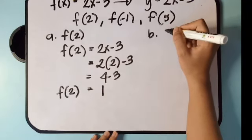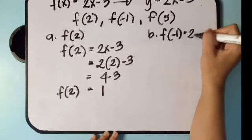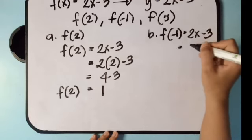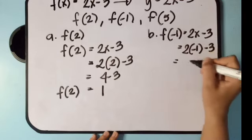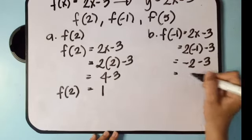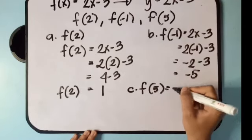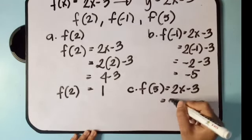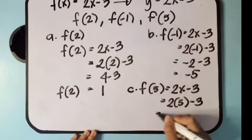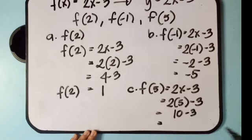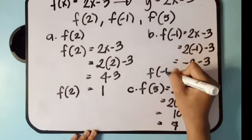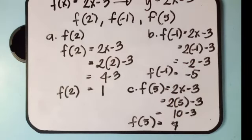For letter B, f of negative 1: that is 2x minus 3, so 2 times negative 1 minus 3, that is negative 2 minus 3, which gives us negative 5. So f of negative 1 is equal to negative 5. That's how simple it is when we evaluate a function — all we have to do is substitute the given value of x to the given function.